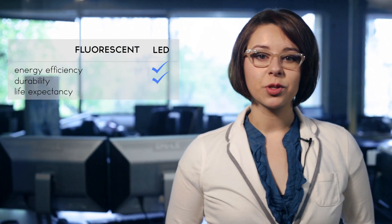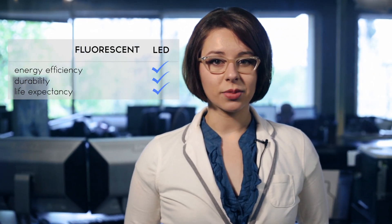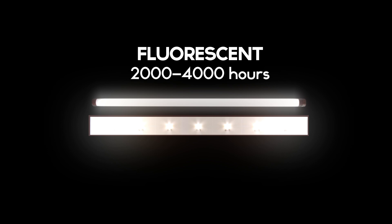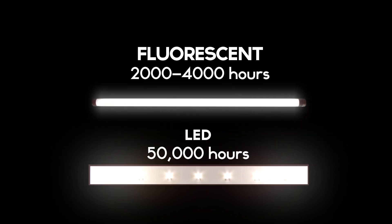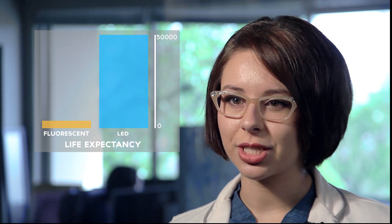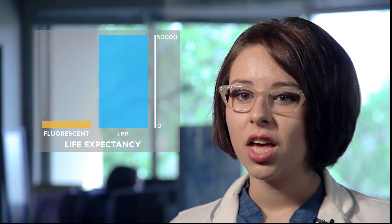Another difference between fluorescent lamps and LED lamps is that LED lamps offer a longer life expectancy. Typical fluorescent lamps may yield two to four thousand hours, but a standard LED lamp can last 50,000 hours or more. This clearly puts LEDs at an advantage, at least for the first few years in the life of a light box, because the LED lamps will probably never need maintenance.